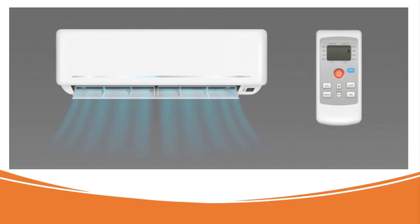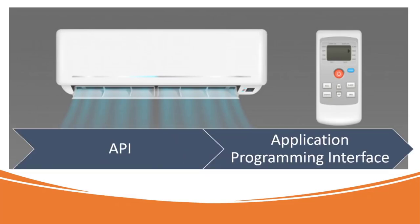In my previous lesson I talked about APIs. In this lesson I'm going to explain what an API is in easy language. An API is basically an Application Programming Interface. Consider it like your AC remote — the remote is an interface to interact with your air conditioner, and it can handle different commands such as increasing or decreasing the temperature. The API hides all the complexities and gives you an easy interface to interact with.